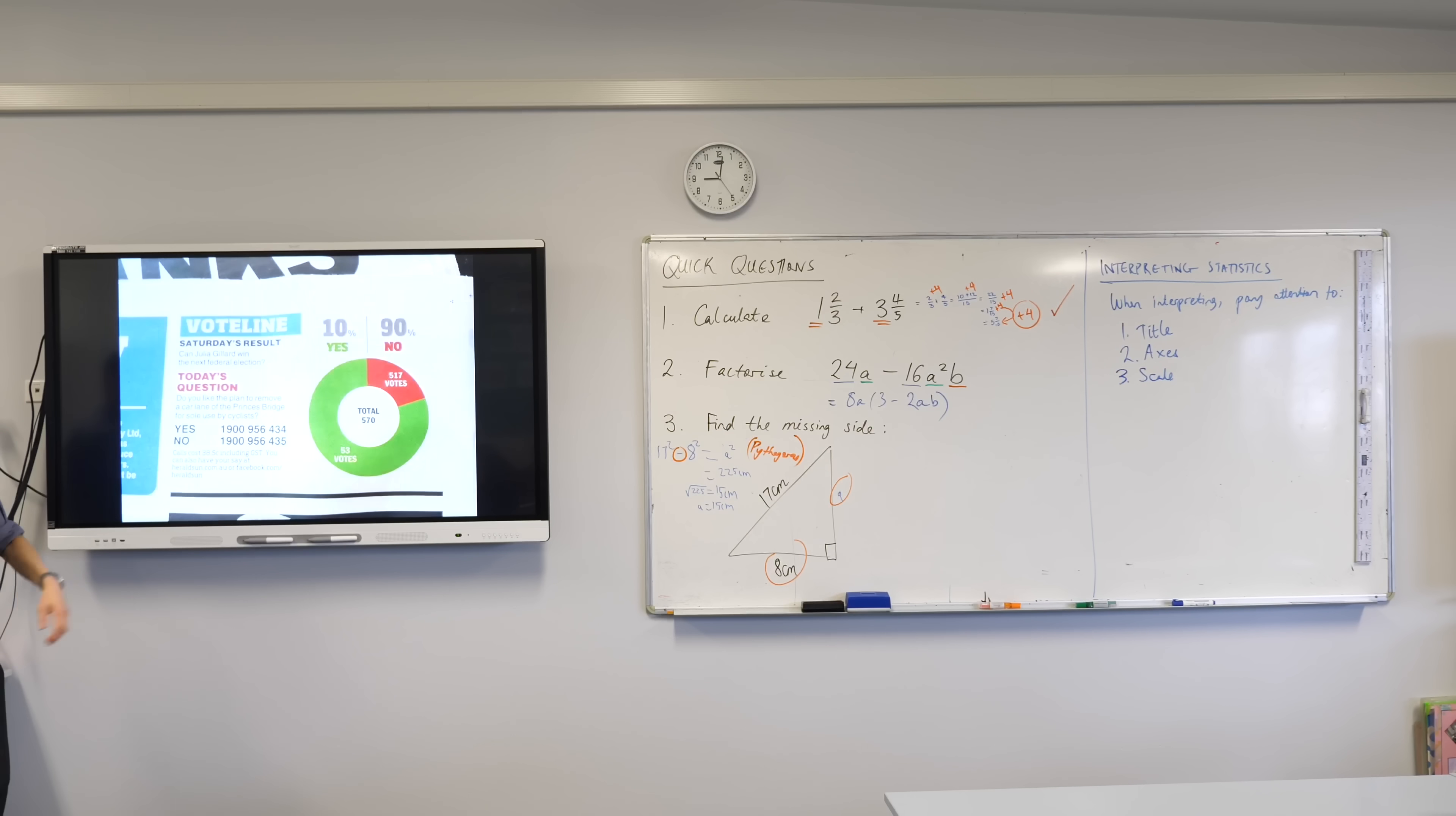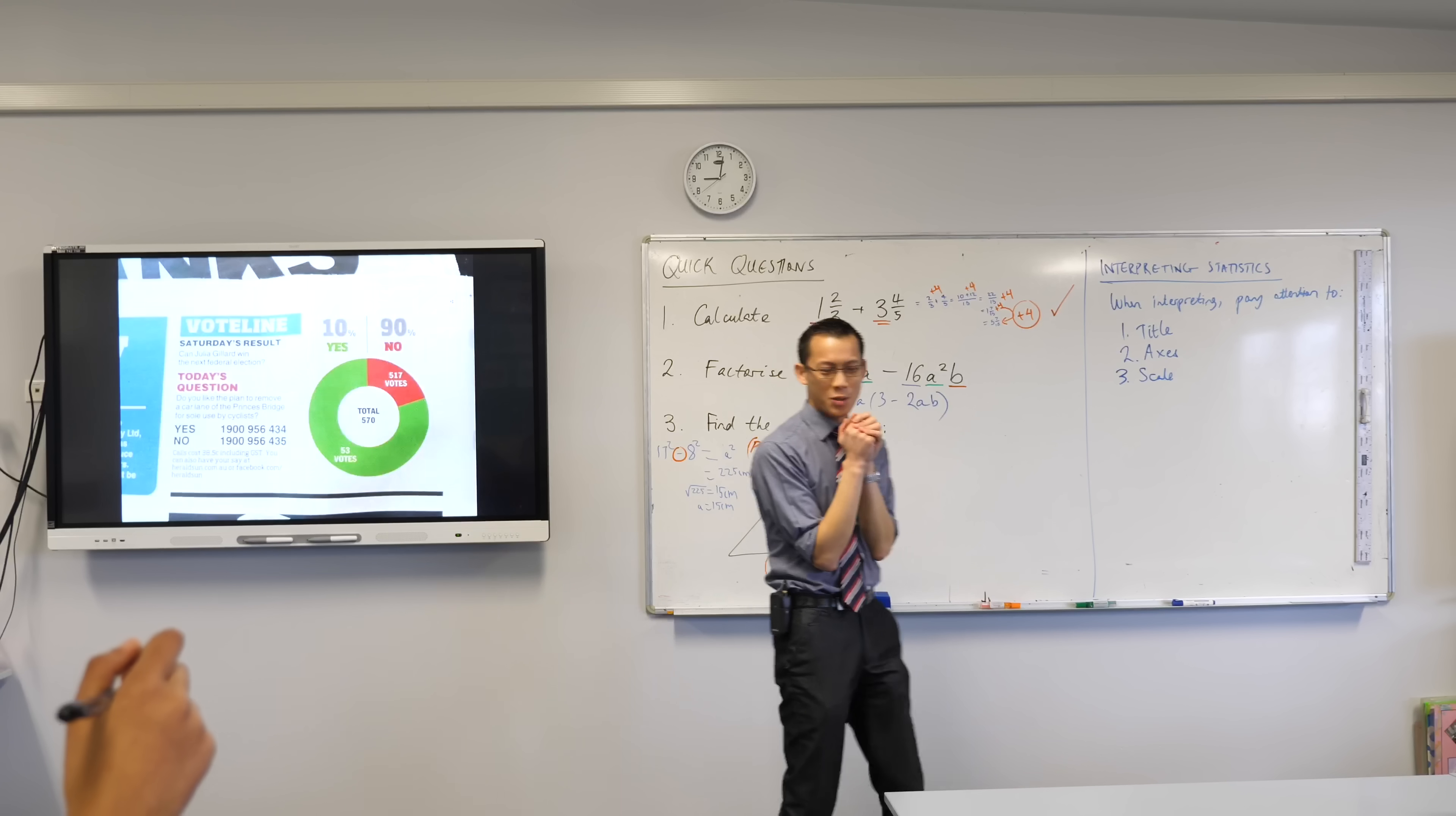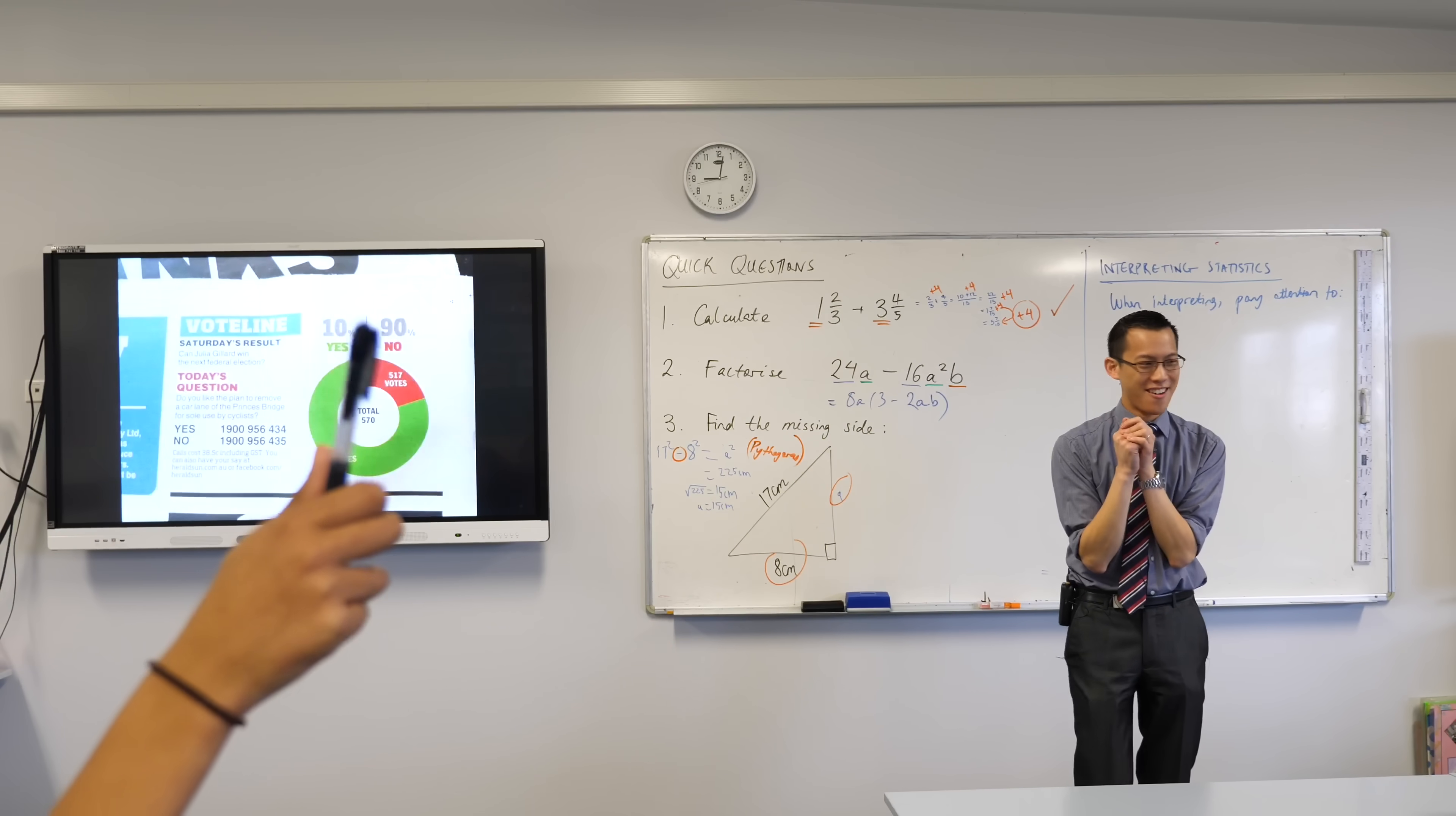I guess sort of a sub question, a subtitle rather, is today's question. It says, do you like the plan to remove a car lane of the ruler? Actually no, I'll take that back. It's this one. What is it? I'm not sure. This is the result, right. Now just have a look at the graph for a minute. Have a look at it. What's wrong with this graph? Because there's like kind of something really big wrong with this graph. Merrick, what are you seeing?